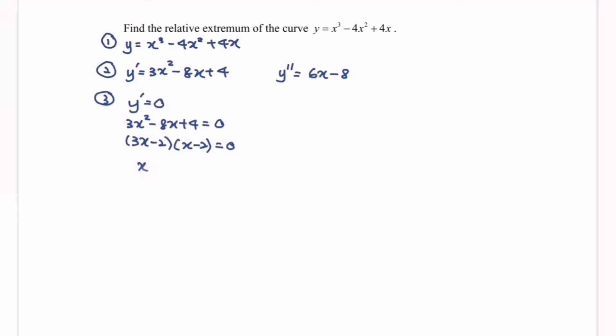So finally, the critical value will be 2 over 3 and 2. Next, kindly substitute the value of x into the first equation.